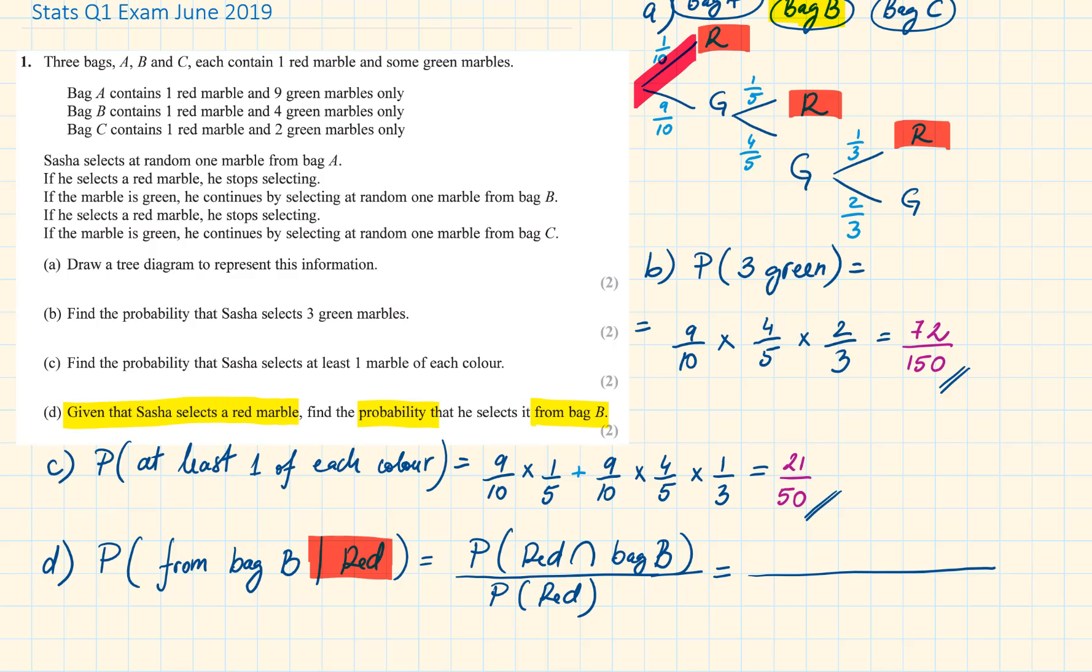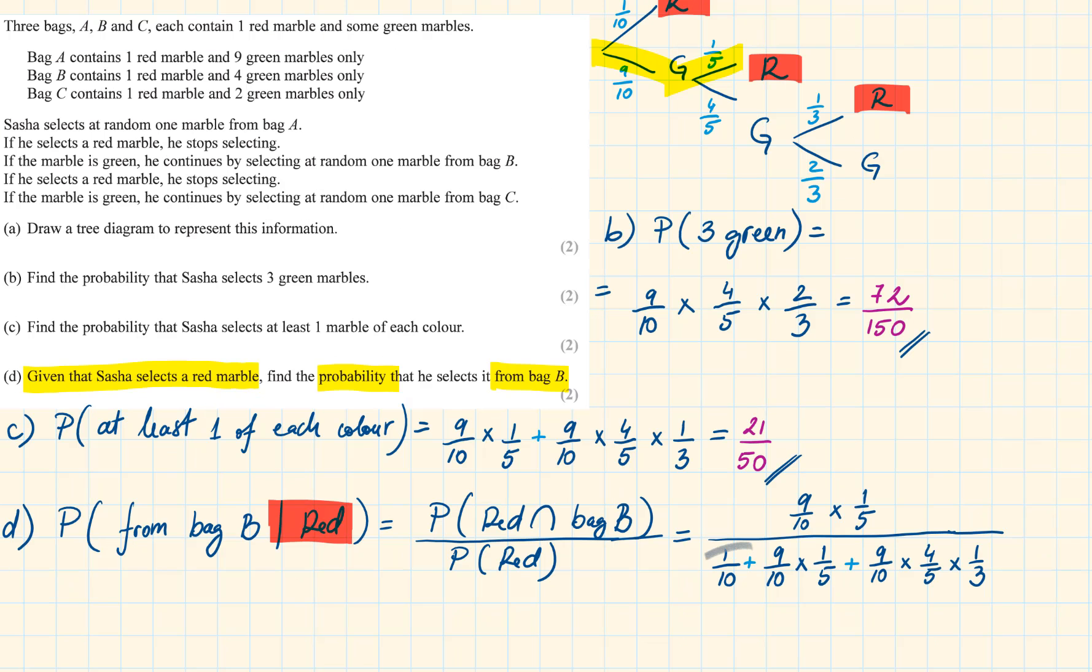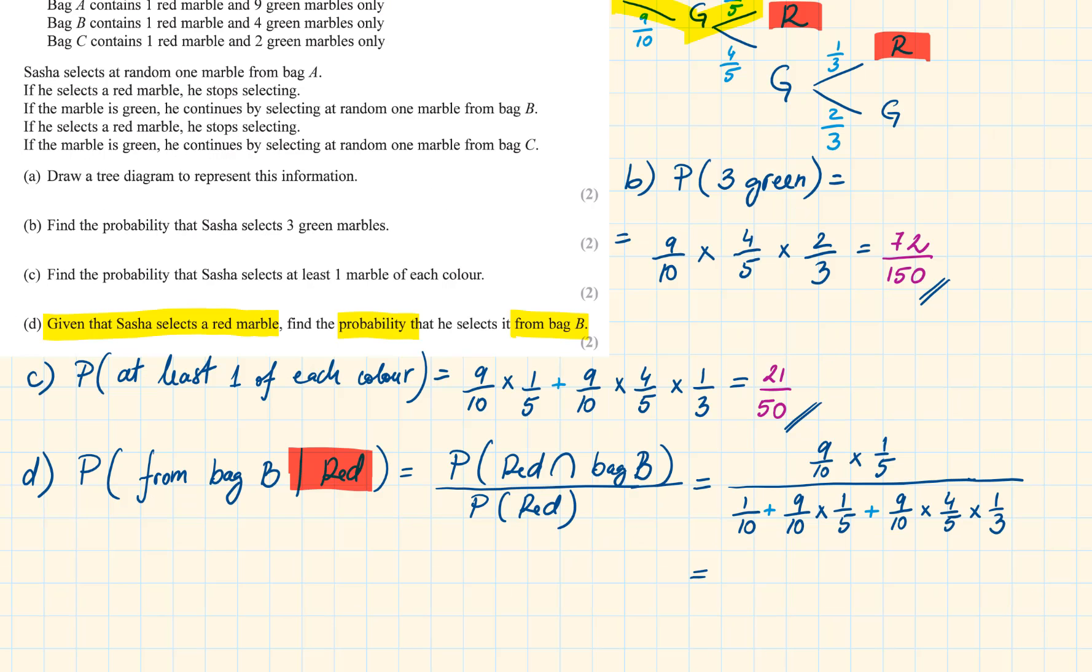So the probability of red is going to be 1 tenth if you are picking from bag A, plus 9 tenths times 1 fifth if you are picking from bag B, and 9 tenths times 4 fifths times 1 third if you pick the red from bag C. The probability of picking a red from bag B, or in other words, the intersection of red with bag B, that's 9 out of 10 times 1 fifth. Going back to the denominator, the probability of red can also be written as 1 minus probability of red not happening, which we have already worked out in part B. Solving this fraction completely will give us the probability which is 9 out of 26.